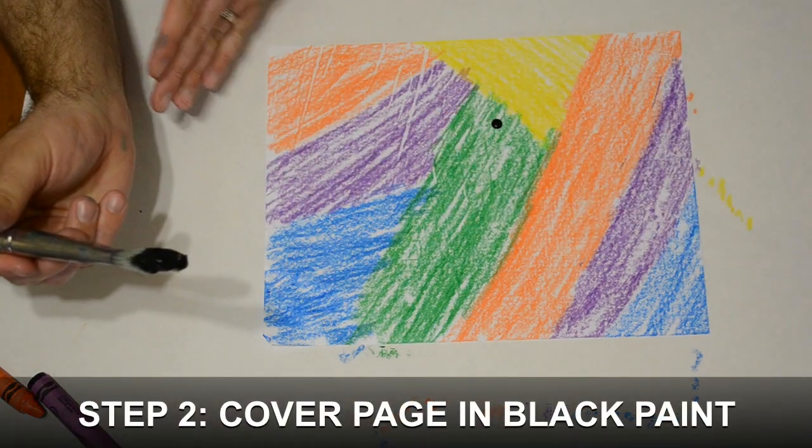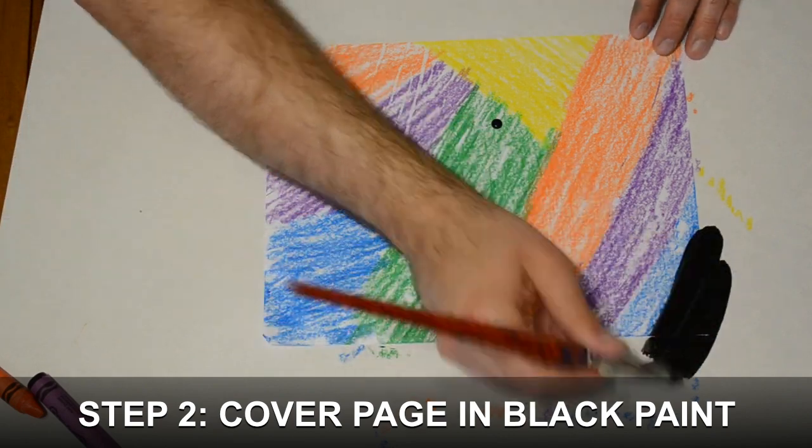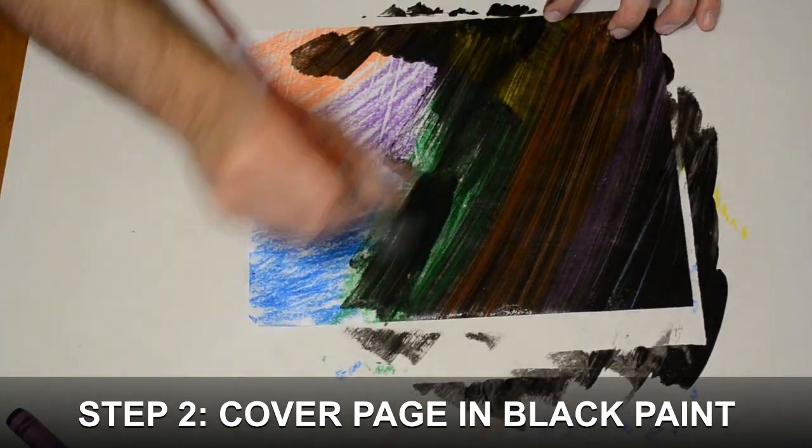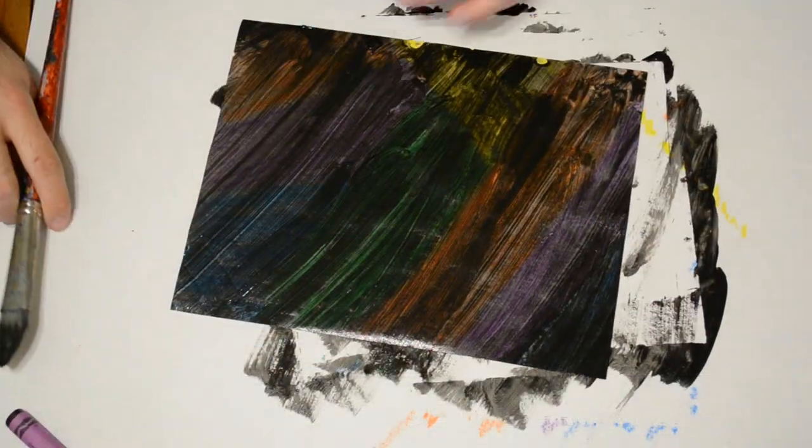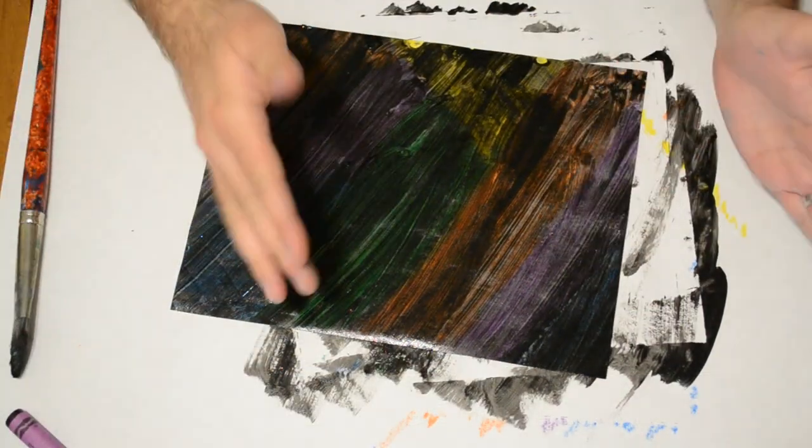Now you are going to paint the whole painting black. Once you have the whole painting covered, you are going to set it aside to dry.